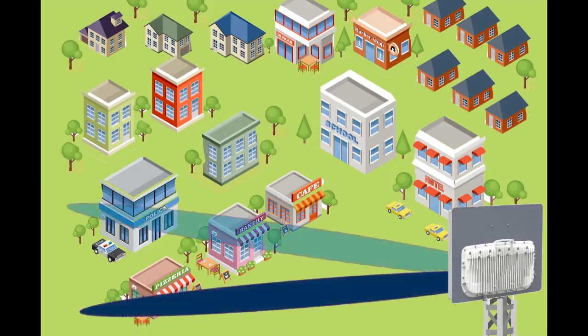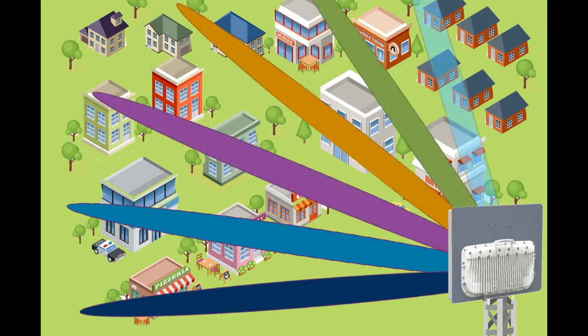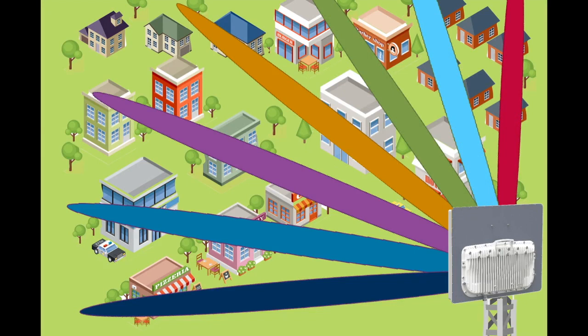This is where MU-MIMO comes in. MU-MIMO, which stands for multi-user MIMO, isolates the traffic of each subscriber, allowing them to transmit and receive concurrently between multiple subscribers. Where there was once one beam, we now have seven beams.